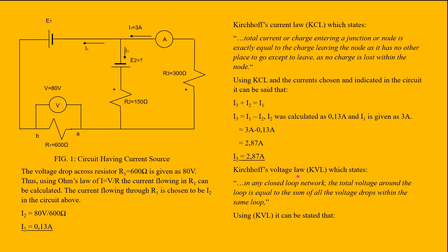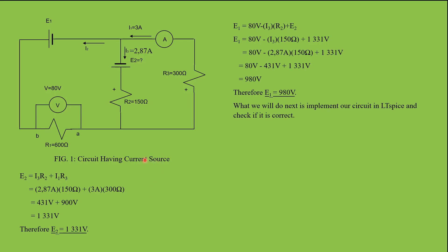Kirchhoff's voltage law, KVL, states that in any closed loop network the total voltage across the loop equals the sum of all voltage drops within the same loop. Using KVL, E2 is equal to I3 times R2 plus I1 times R3. So E2 equals 2.87 amps times 150 ohms plus 3 amps times 300 ohms.